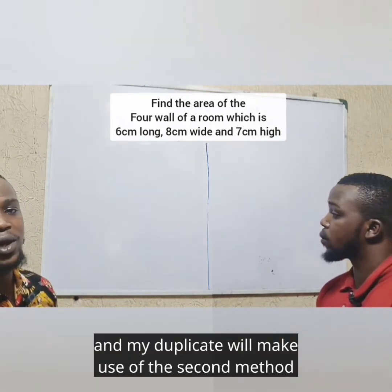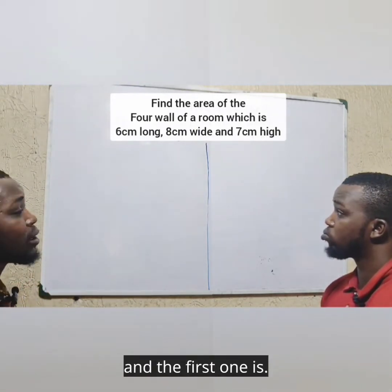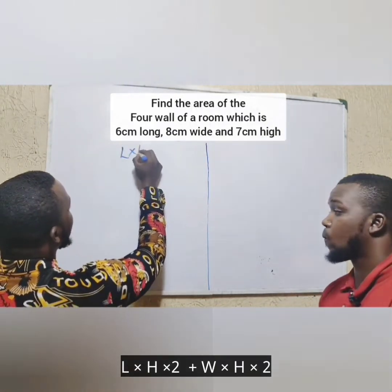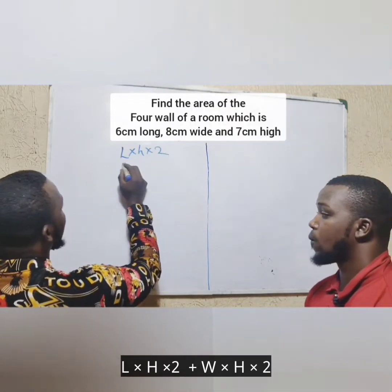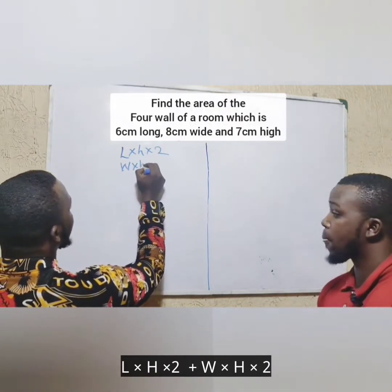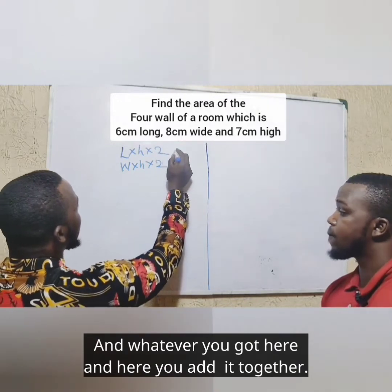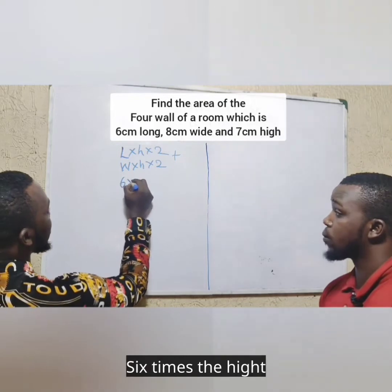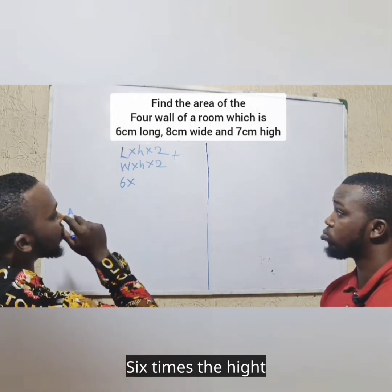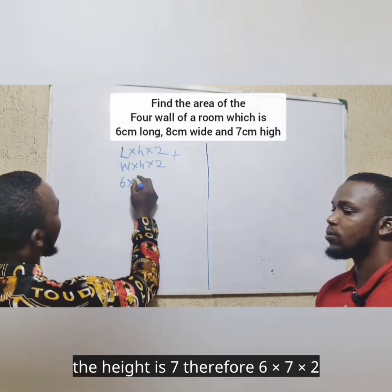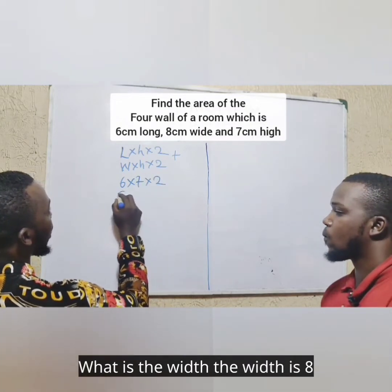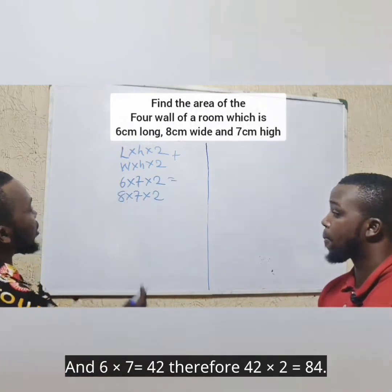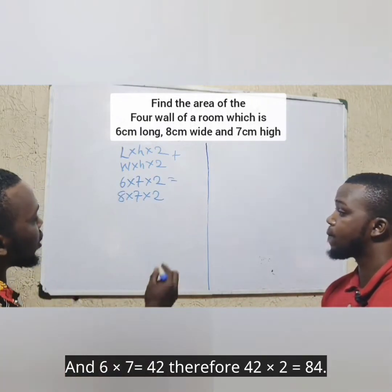I'm going to make use of the first method. The first method is: length times height times two, plus width times height times two, and you add them together. The length is six, so six times seven times two, plus the width eight times seven times two. Six times seven gives you 42, times two gives you 84.